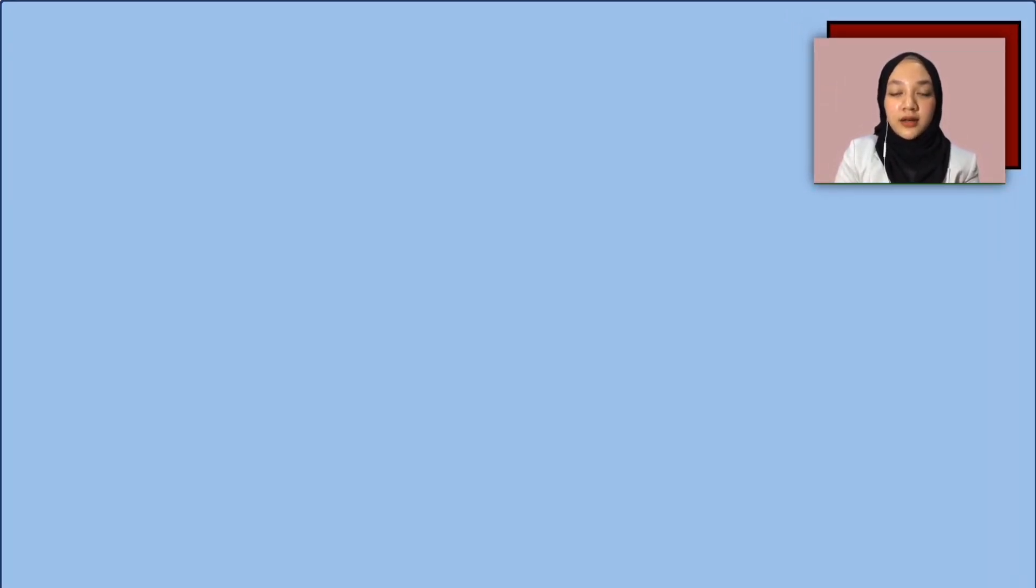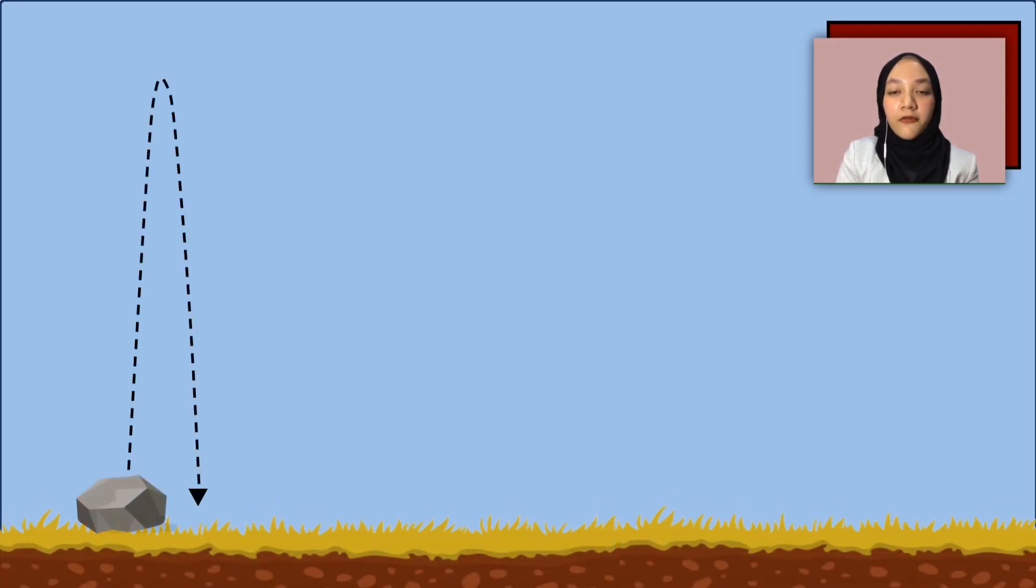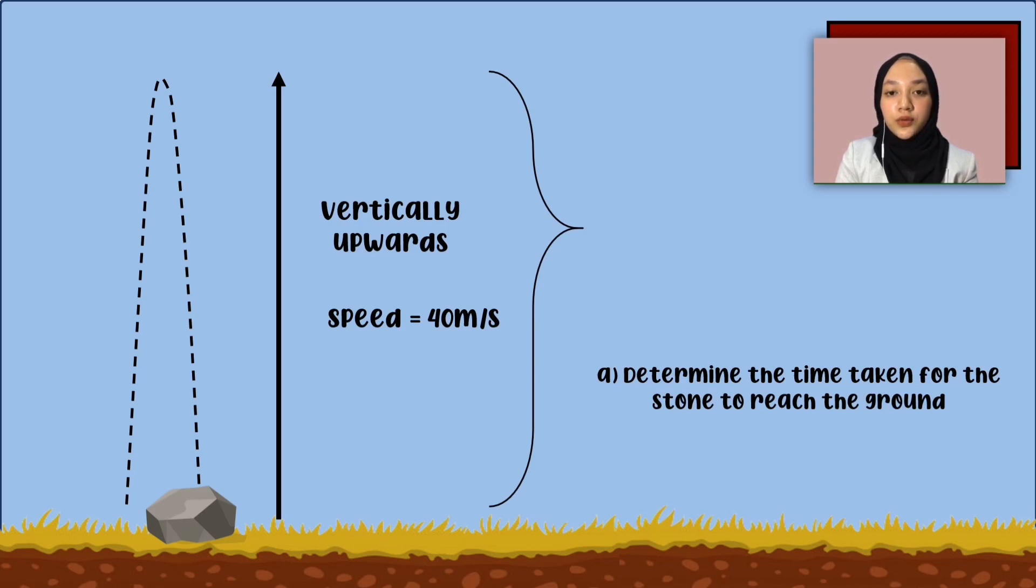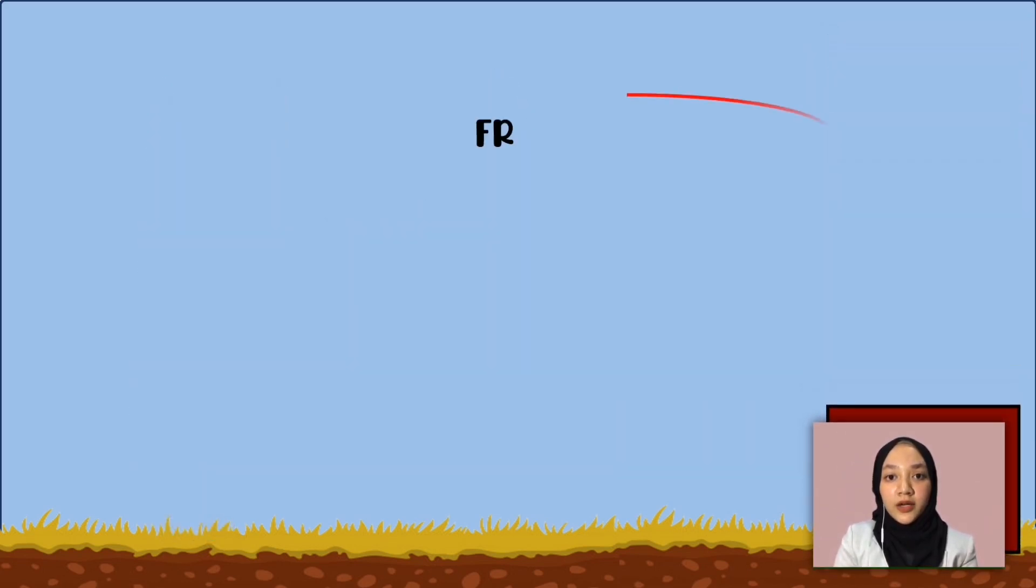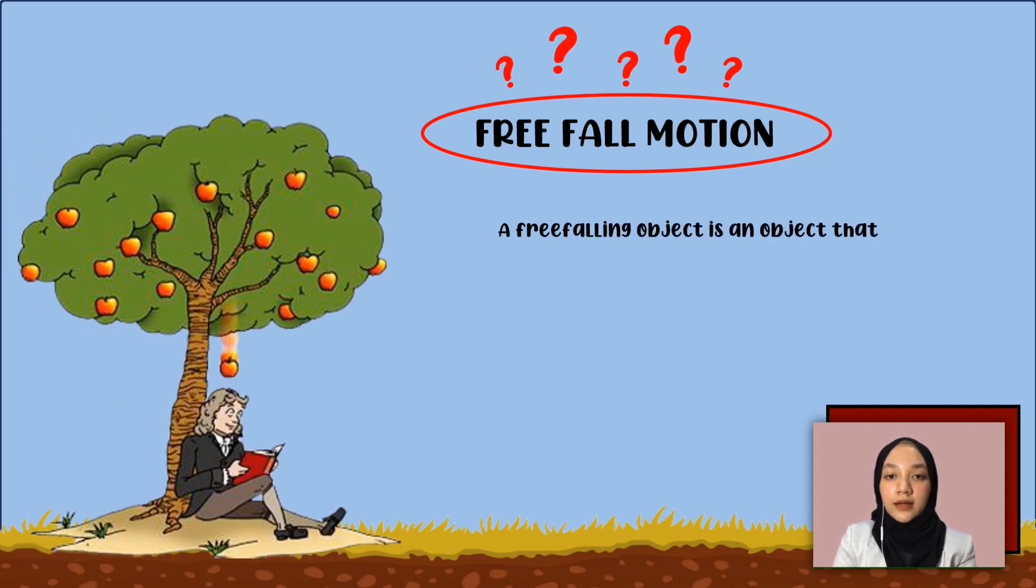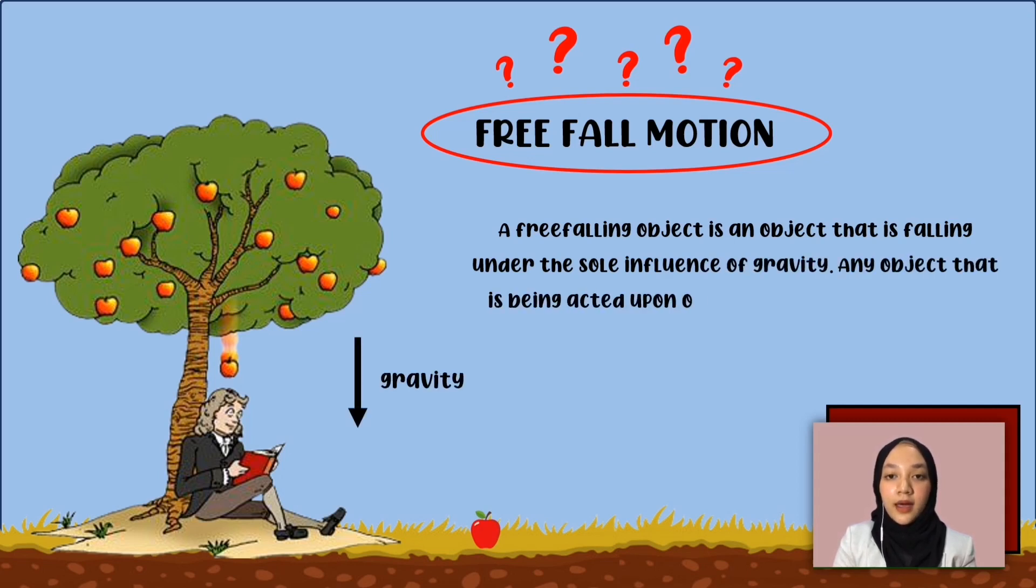The next situation: a stone is thrown vertically upwards from the ground at a speed of 40 meters per second. For question A, the question asks us to determine the time taken for the stone to reach the ground. From this question, we should use the concept of free fall. What is free fall? Let me tell you, a free falling object is an object that is falling under the sole influence of gravity. Any object that is being acted upon only by the force of gravity is said to be in the state of free fall.